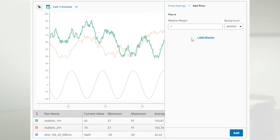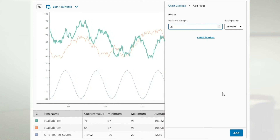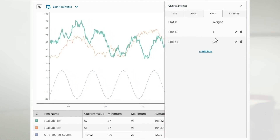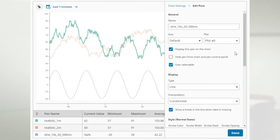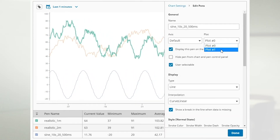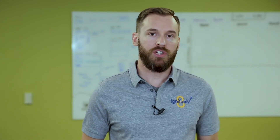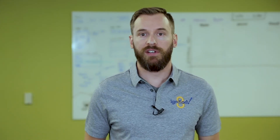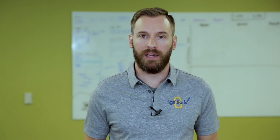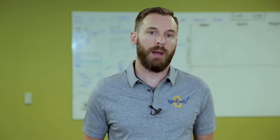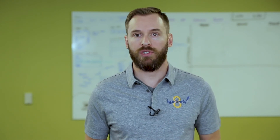Since the Power Chart is designed for the Perspective module, the component has been designed to meet the needs of mobile users out of the box. When the component is viewed on a mobile screen, the chart and its configuration options adapt themselves automatically to be touch-optimized and to be used on a small screen.